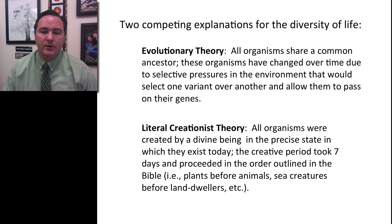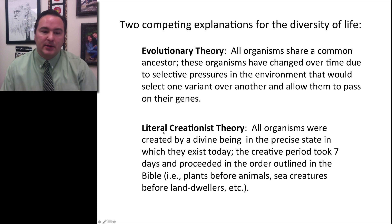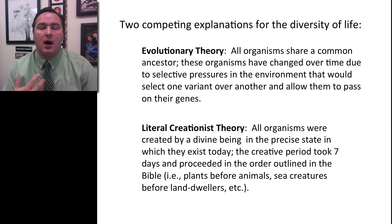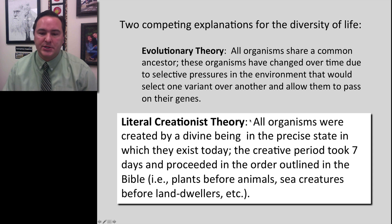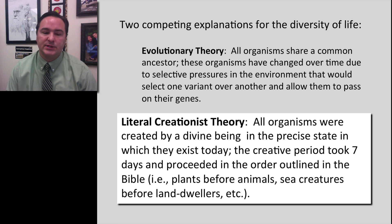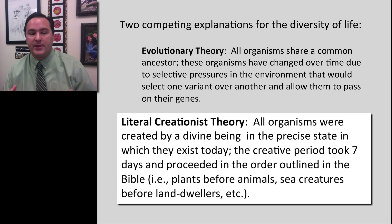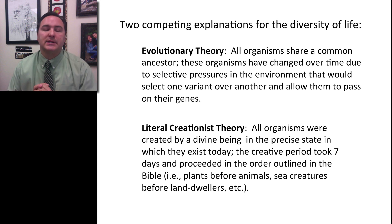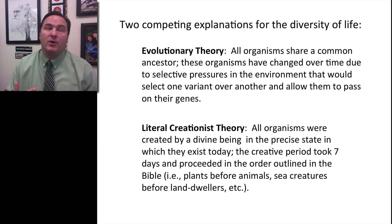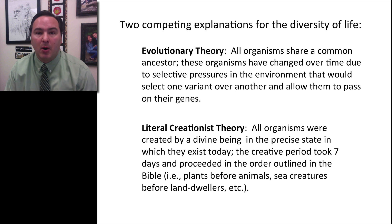Perhaps another possibility — and even though I'm using the word theory here, really what I mean is another possibility — is the literal creationist's explanation for the diversity of life. This is the Judeo-Christian story that all organisms were created by a divine being in the precise state in which they exist today, and that this creative period took seven days and proceeded in the order outlined in the Bible. We're just using these two as an example to move through how we might come up with the best explanation for the diversity of life on the planet.